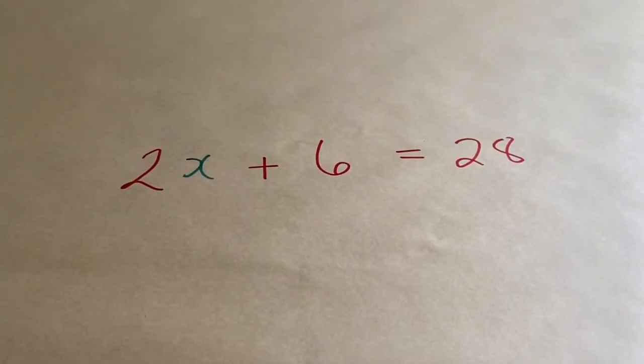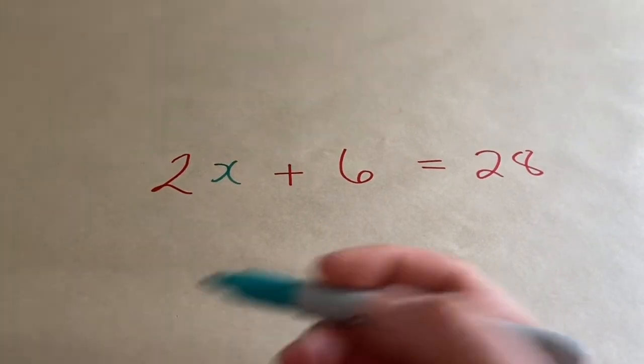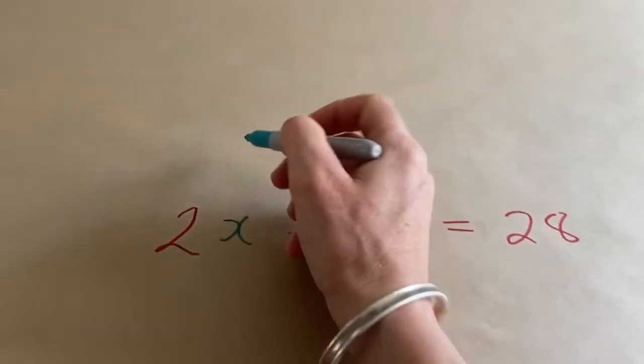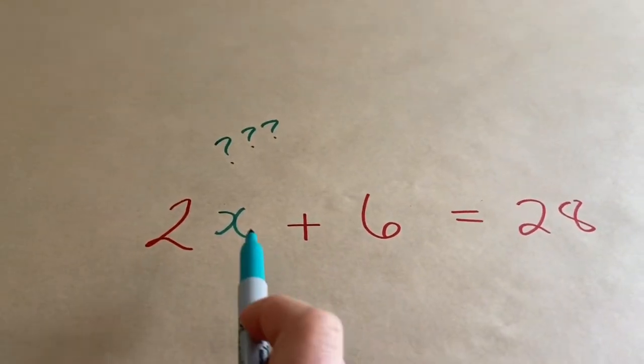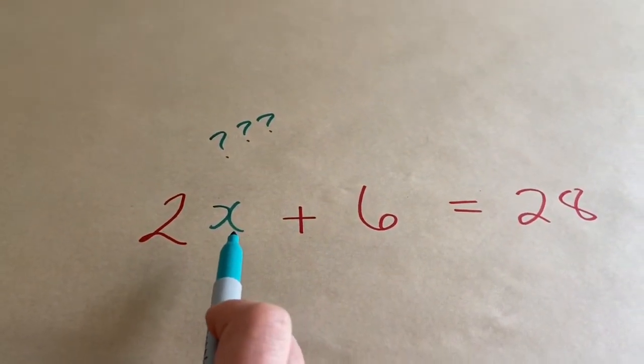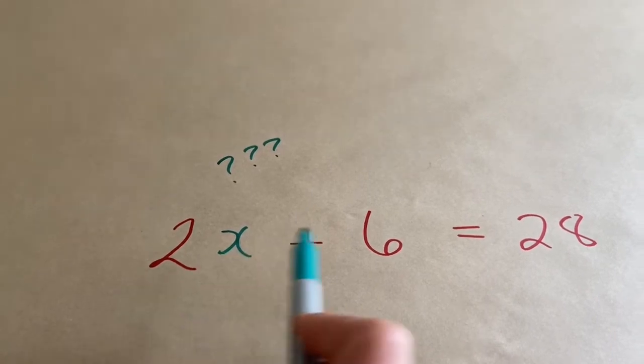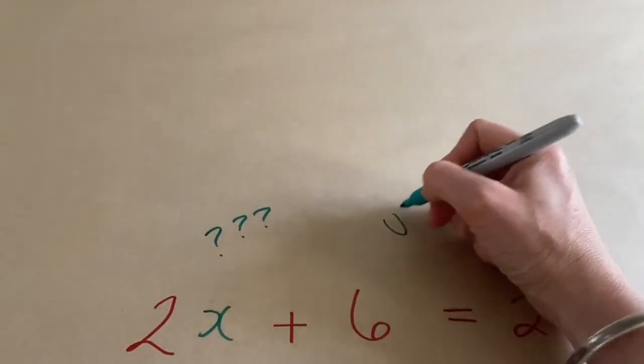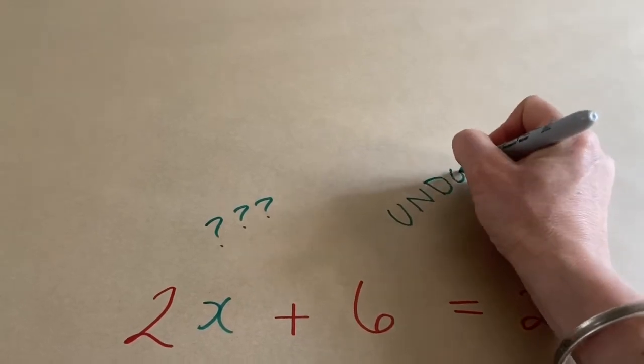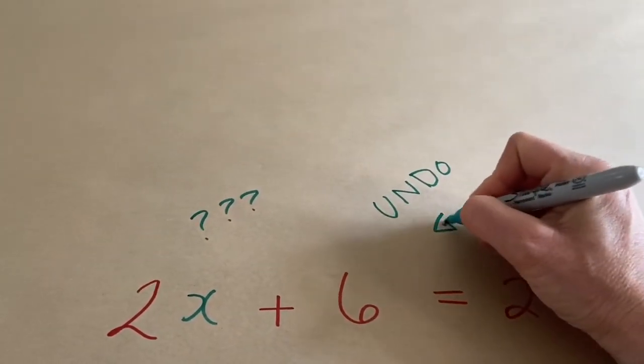Now, we'll try the second question from the video. This time, we started and we didn't know what the x was at the beginning. But we can find out because we know we took the x, we multiplied it by 2, and then we added 6, and we got 28. We know that we want to undo the things we did to x, and go backwards.